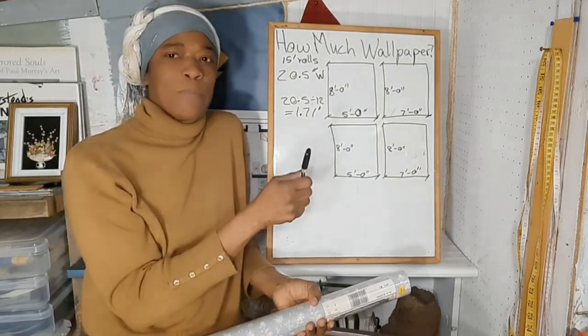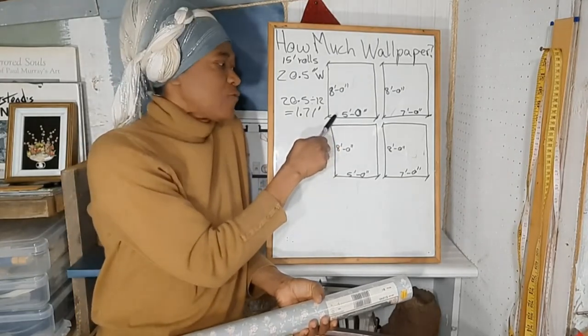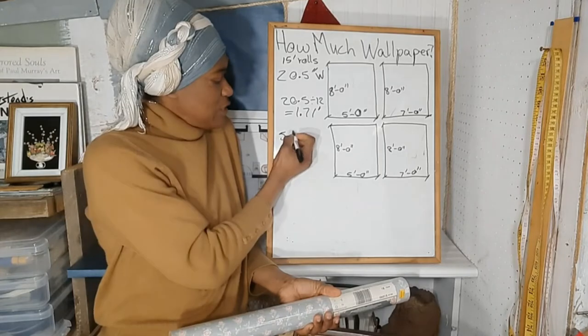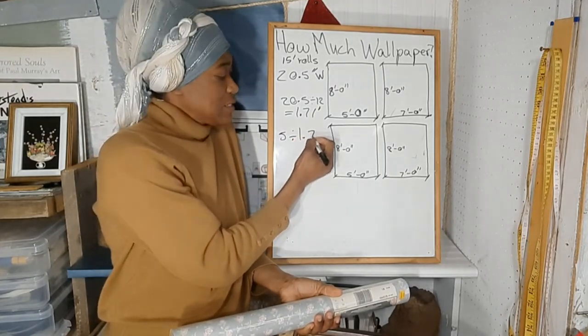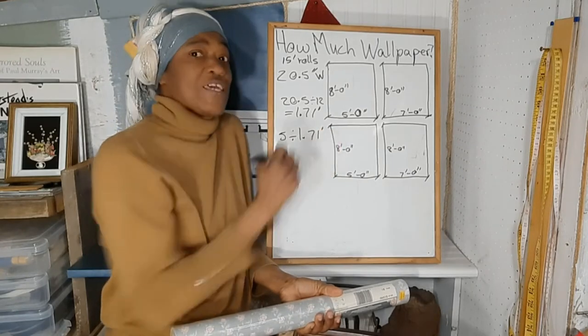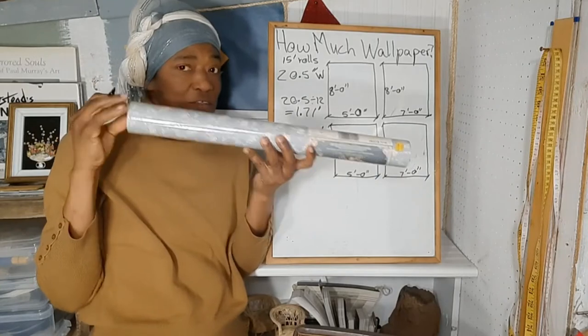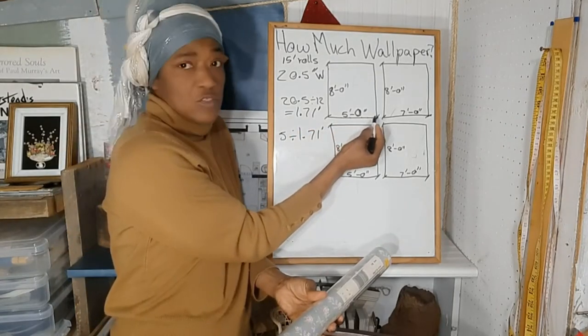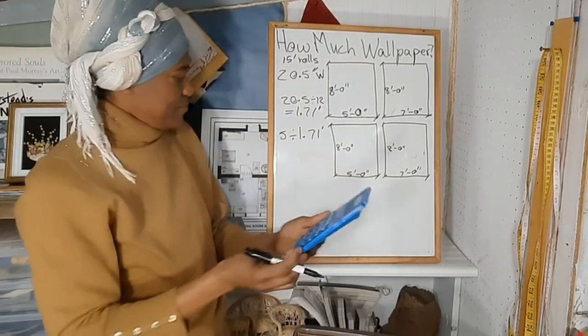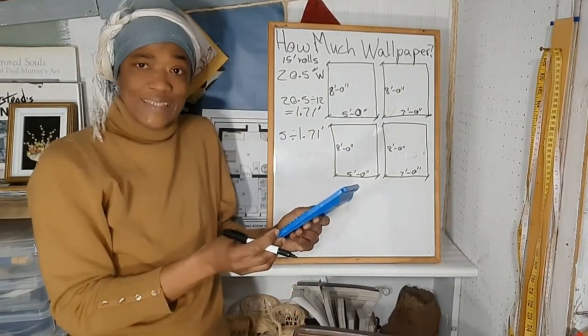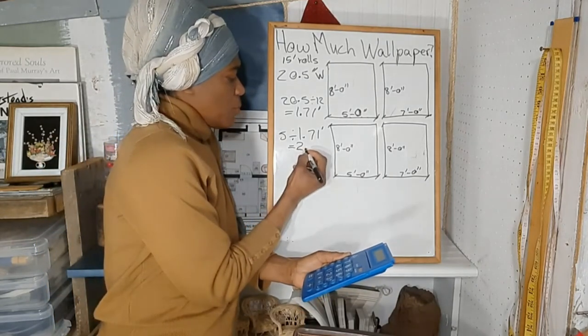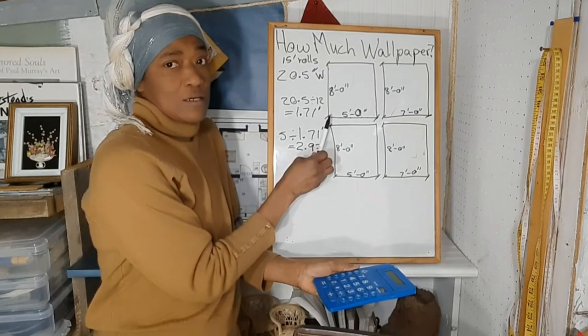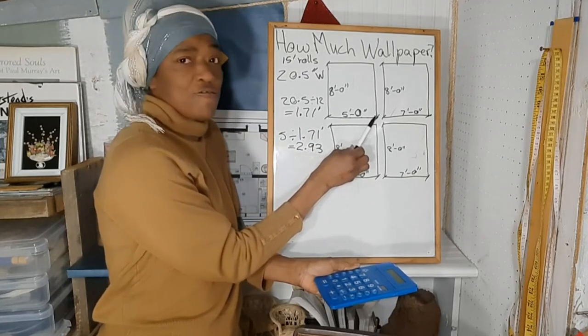So the next thing we do is look at how many widths of wallpaper we need for a wall that's 5 feet wide. Therefore, we take the 5 and we divide by 1.71 feet, because the width of the wallpaper is 1.71. So we want to see how many widths we need to go across the wall. When we divide 5 by 1.71, we get 2.93, so we need 2.93 widths of wallpaper to go across a 5-foot wall.